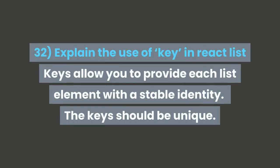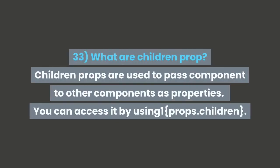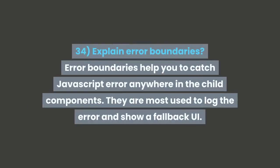Question 32: Explain the use of keys in React lists. Keys allow you to provide each list element with a stable identity. The keys should be unique. Question 33: What are children props? Children props are used to pass components to other components as properties. You can access it by using props.children.